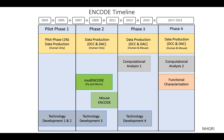Here is a brief history of the ENCODE project. It started in 2003 as a pilot phase using microarrays. Phase two started to use whole genome sequencing. Phase three just finished a few months ago. We are currently in phase four, which started in February 2017.